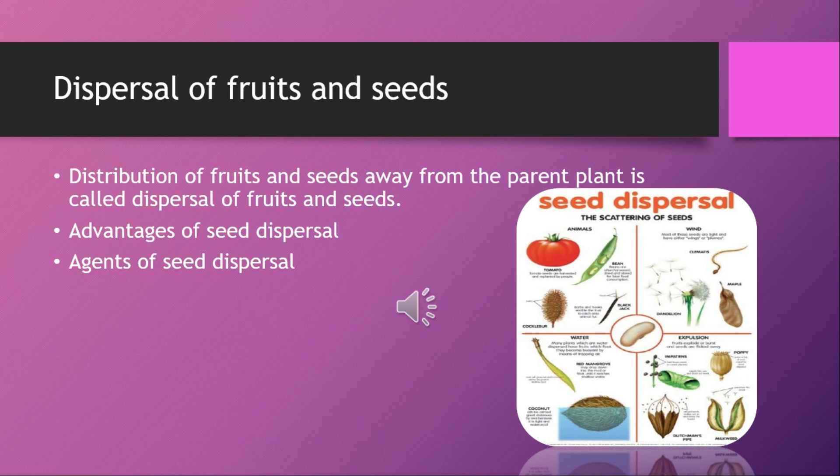Third, dispersal helps to cover barren lands — where no one is cultivating — with plants, as seeds move from one place to another with the help of wind and water. It also prevents competition for food, space, and light due to overcrowding, since many seeds falling in one place would compete for survival.